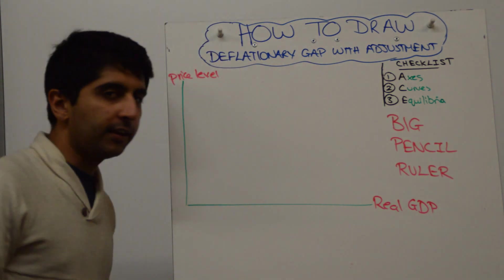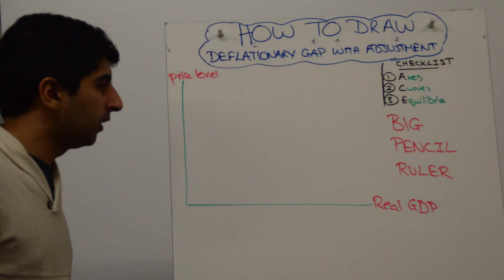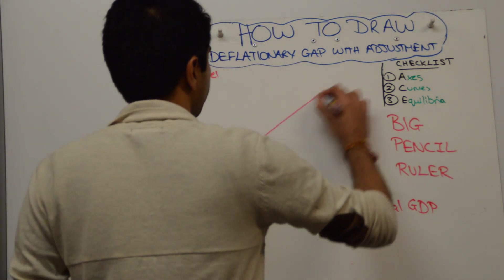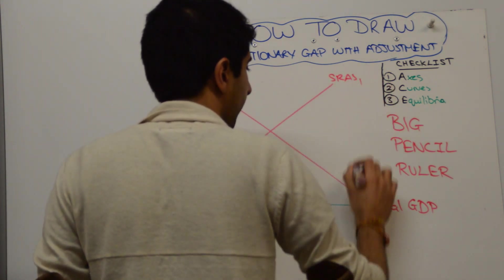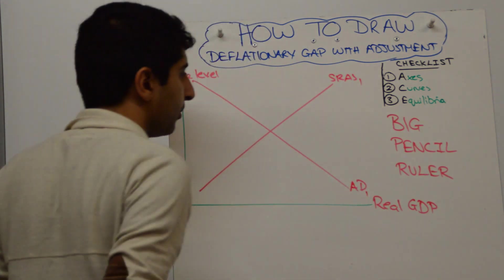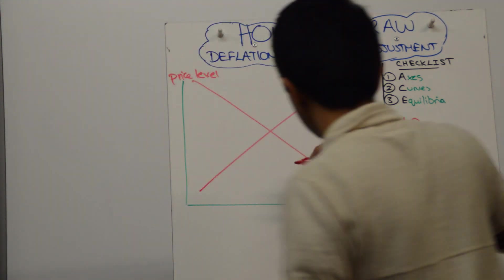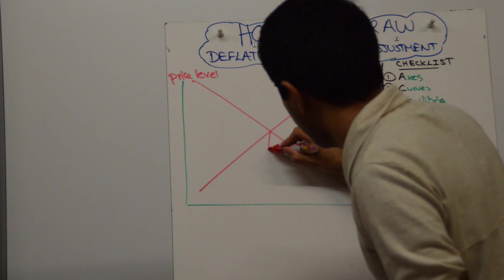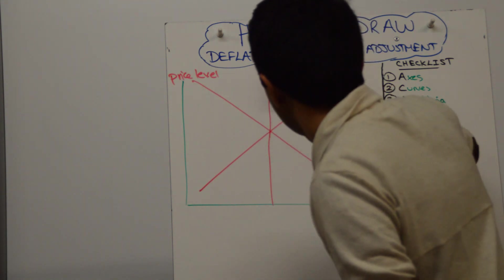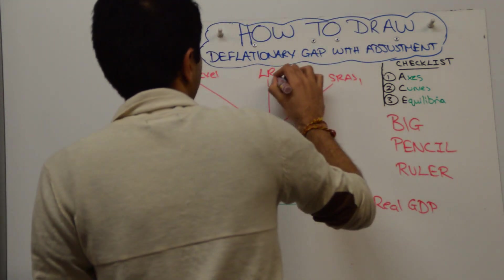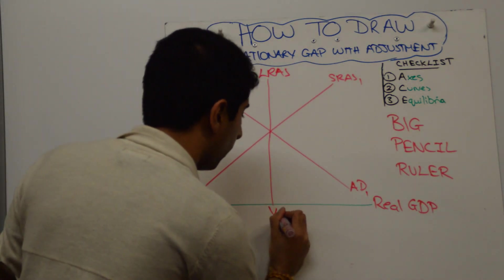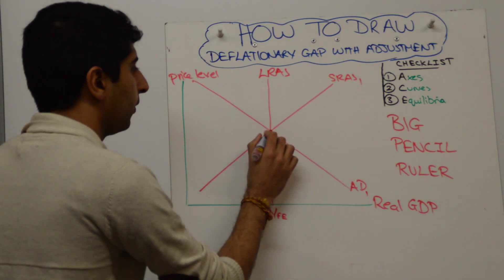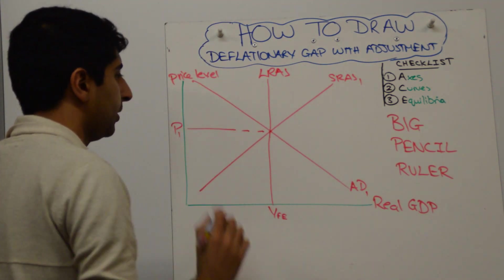The way to do this is start with an economy in full equilibrium, where you have SRAS and AD, labeled like that, but that happens to be also the full employment level of output. So we can ensure that LRAS goes through that equilibrium too. Label that YFE with a price level of PY.